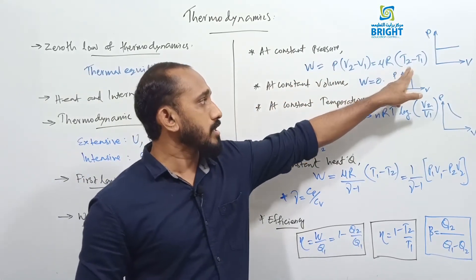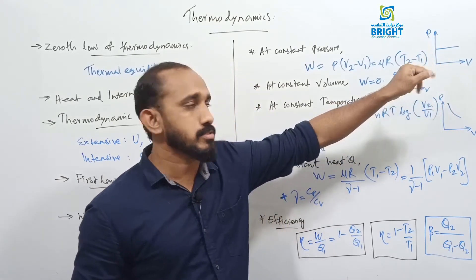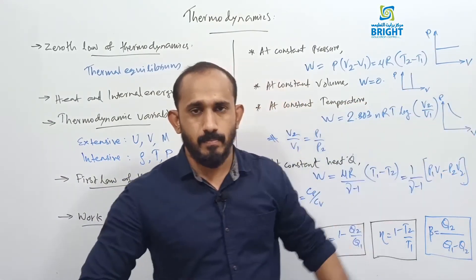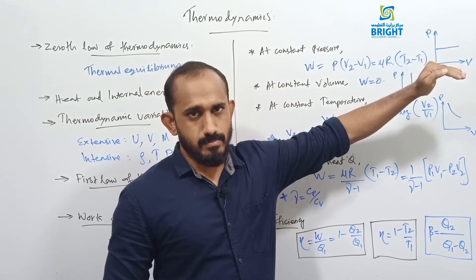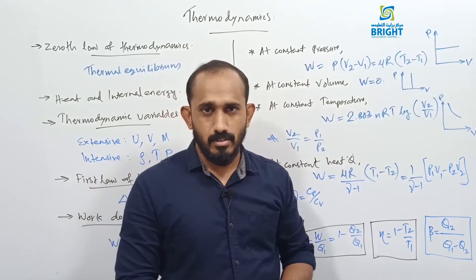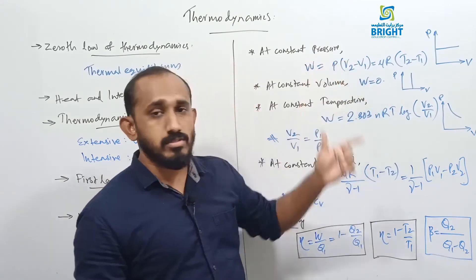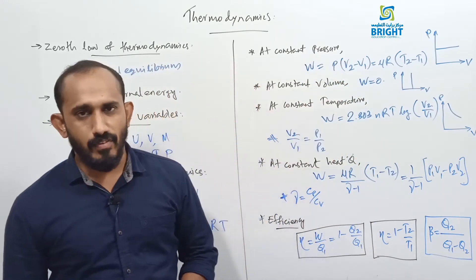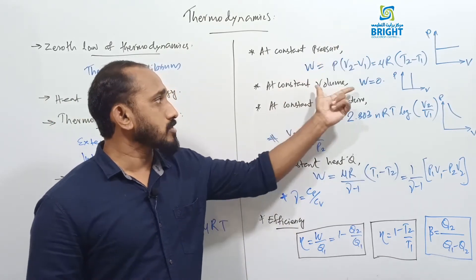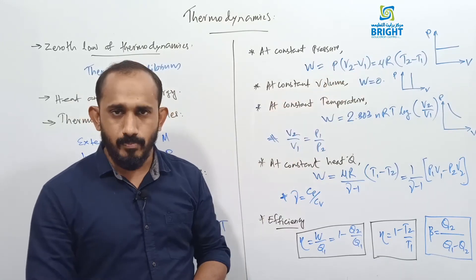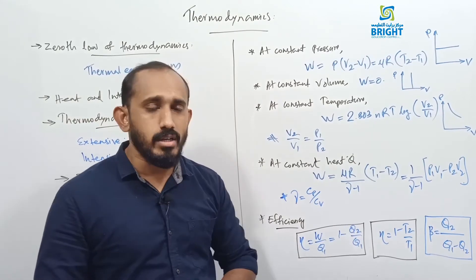In a P-V diagram for an isobaric process, pressure is constant as volume increases, so the slope is zero. The area under the P-V diagram gives the work done, and this area is maximum in an isobaric process. For an isochoric process (constant volume), if pressure changes but volume does not, the work done is zero because W = P dV and dV = 0.